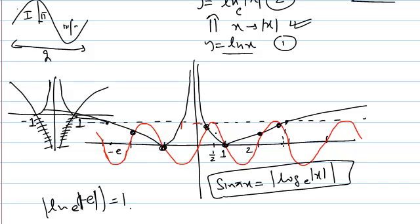The most important things are: drawing with proper scale, and identifying at what point the mod graph crosses y = 1. We found that it crosses at x = e ≈ 2.7, which allowed us to draw the graph properly and confidently figure out that there are 6 points of intersection, giving 6 solutions.